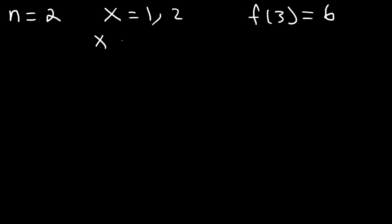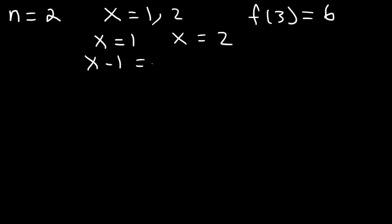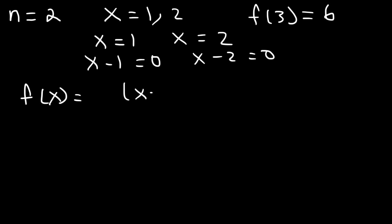So let's focus on the zeros: x is equal to 1 and x is equal to 2. Now I'm going to take the 1 and move it to the left side. So the factor that I have is x minus 1, and the other factor is x minus 2. Now the function is going to have those factors, and we need to determine the linear coefficient a.